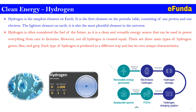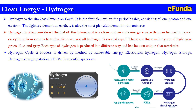The hydrogen production process using renewable energy involves: renewable electricity generation, then electrolysis to produce hydrogen, then hydrogen storage, then hydrogen charging stations for FCEVs, and finally supply to residential spaces requiring electrical energy. This hydrogen cycle is driven by renewable energy through electrolysis, storage, charging stations, FCEVs, and residential spaces.